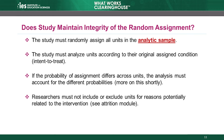A third way that a study can compromise random assignment is not assigning all units to receive the intervention with the same probability while at the same time not accounting for those differences. Using different probabilities in random assignment is relatively common, and the WWC accepts this approach as well-executed random assignment so long as it is accounted for in the analysis. We'll discuss related concepts, including sample attrition, in later modules.